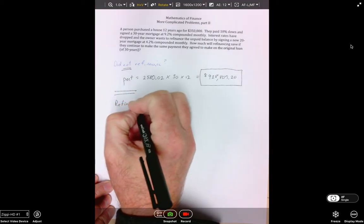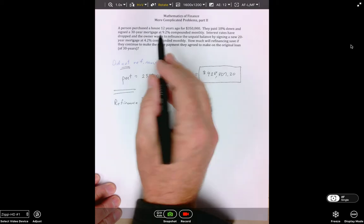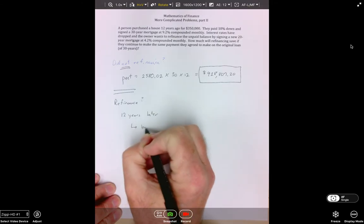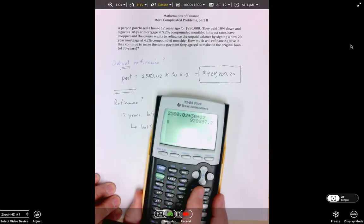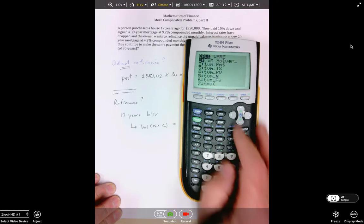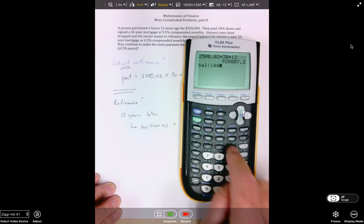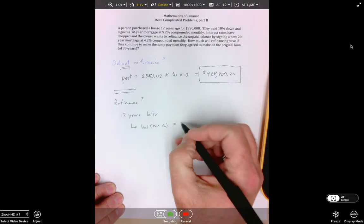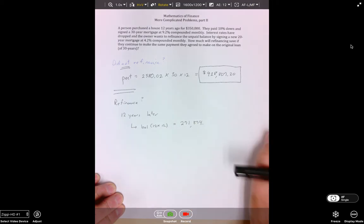Now, the next thing we're going to do is we want to see how much would we pay if we refinanced. Well, the first thing we have to realize is we refinanced 12 years later. So what I would do is I would do balance 12 times 12 to find out how much we owe the bank after the 12 years. I'm going to come into finance, search down, find my balance key, and put in 144, which is 12 times 12. After 12 years, when we decide to refinance, we owe the bank $271,874.67.